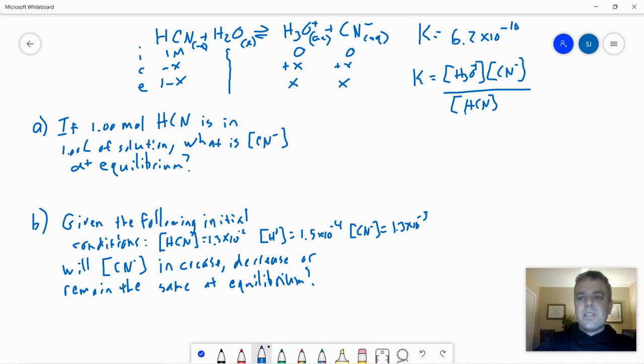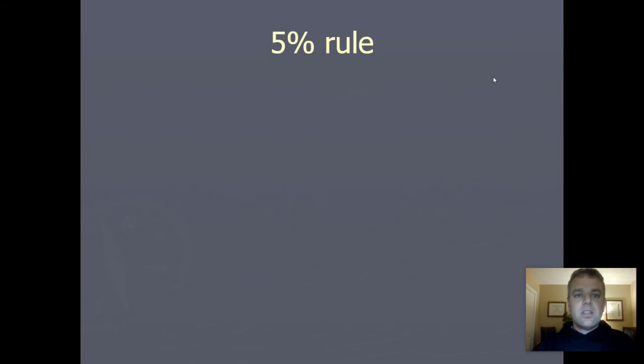So now we plug all the numbers into our equilibrium expression. We have 6.2 times 10 to the minus 10th equals X times X over 1 minus X. Now, this is a case where our equilibrium constant is very small.